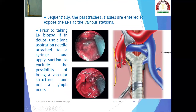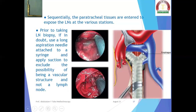Sequentially, the paratracheal tissues are entered to expose the lymph nodes at the various stations. Prior to taking a lymph node biopsy, if in doubt, use a long aspiration needle attached to a syringe and apply suction to exclude the possibility of a vascular structure. Here we can see the major vessels — the azygous vein, the right pulmonary artery, and its first branch — and the subcarinal lymph nodes, which may look like a vessel.